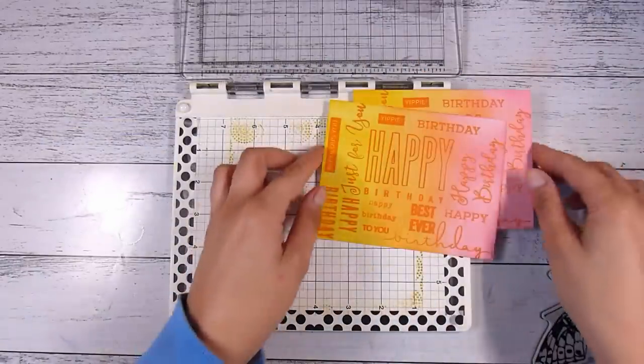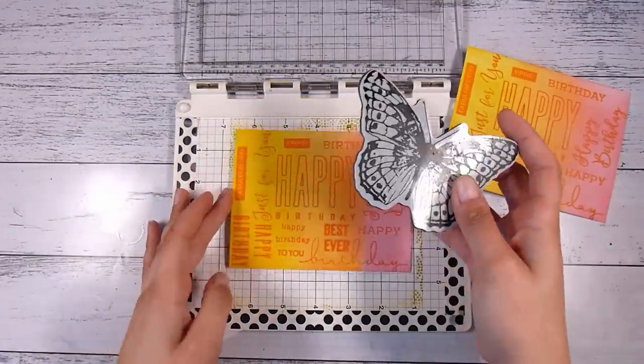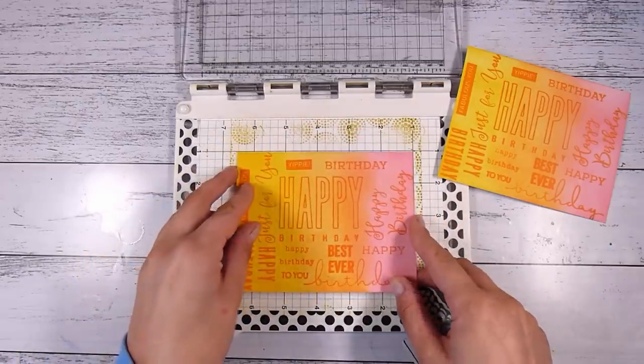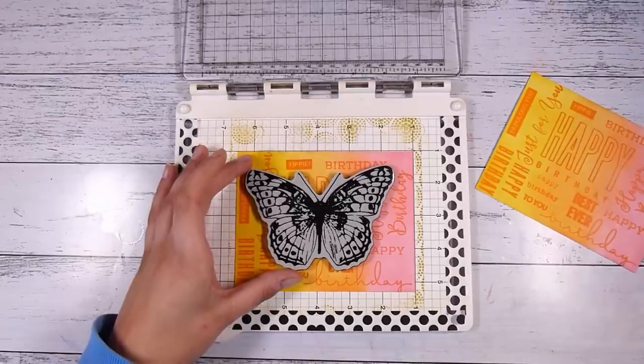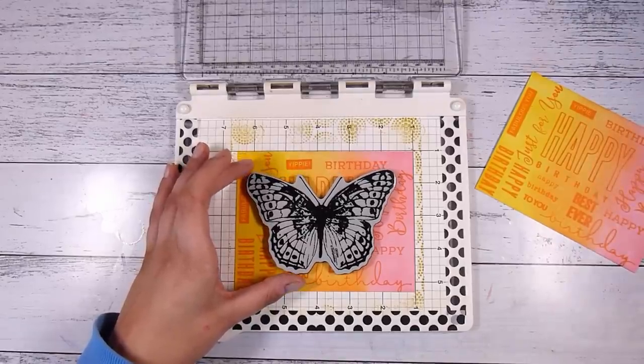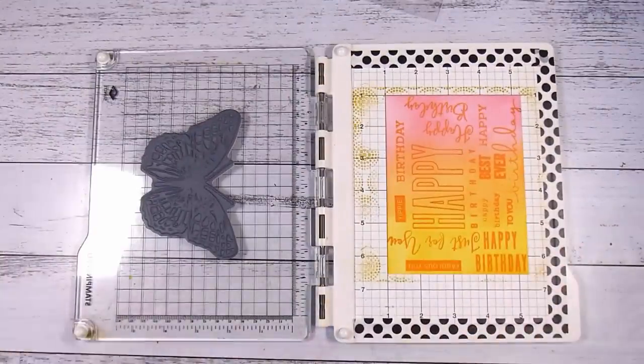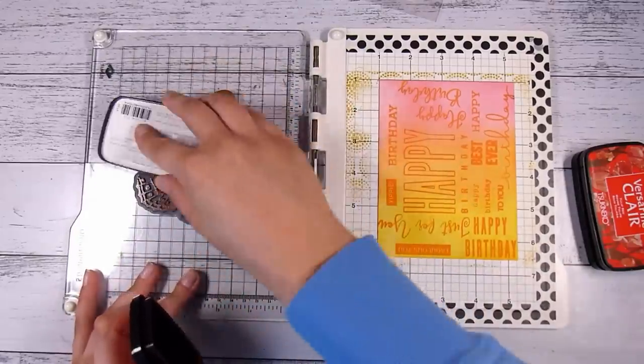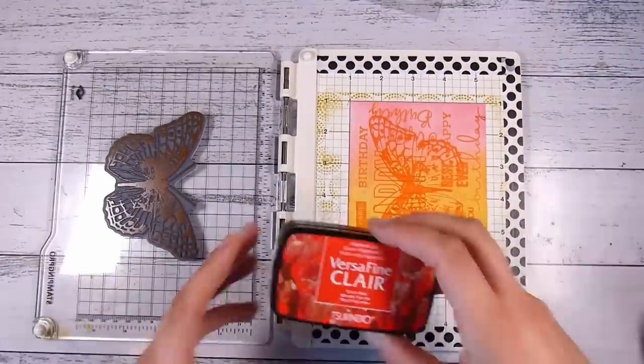Then I have this butterfly. This one from Stampendous has been discontinued, which makes me so sad, but it is still a gorgeous big butterfly stamp. You can choose any stamp here as long as it's got some open spaces. Now probably this one has not quite as much open space as I would like it to, but it still works, and that's what I'm showing you. It doesn't matter what you have in your stash—usually you can make it work with a little bit of give and take.